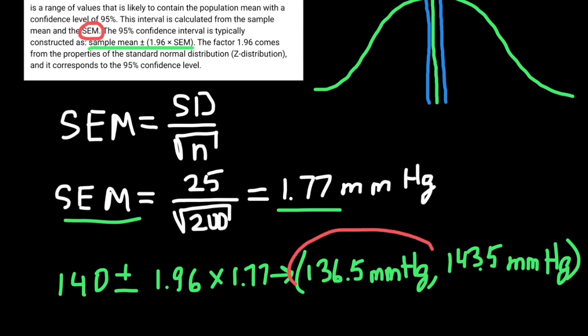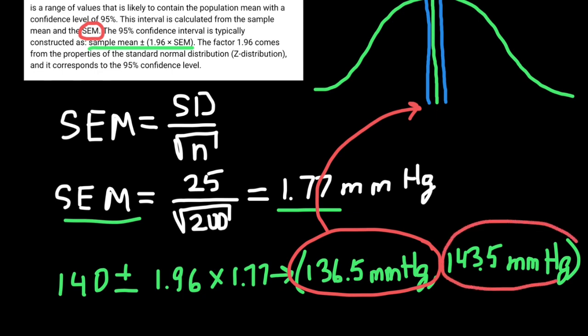So this is going to be our 95% confidence interval — a 95% probability that we are going to find the mean of the population between these two numbers. If we take 100 samples, in 95% of cases the mean of the population would be between these two extremes, and in only 5% of cases it would be outside this interval.